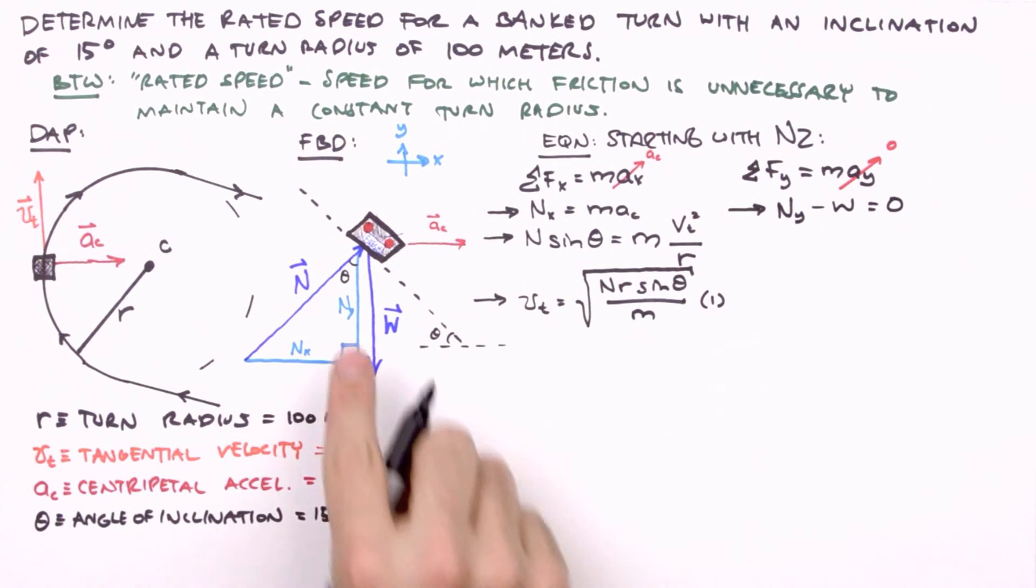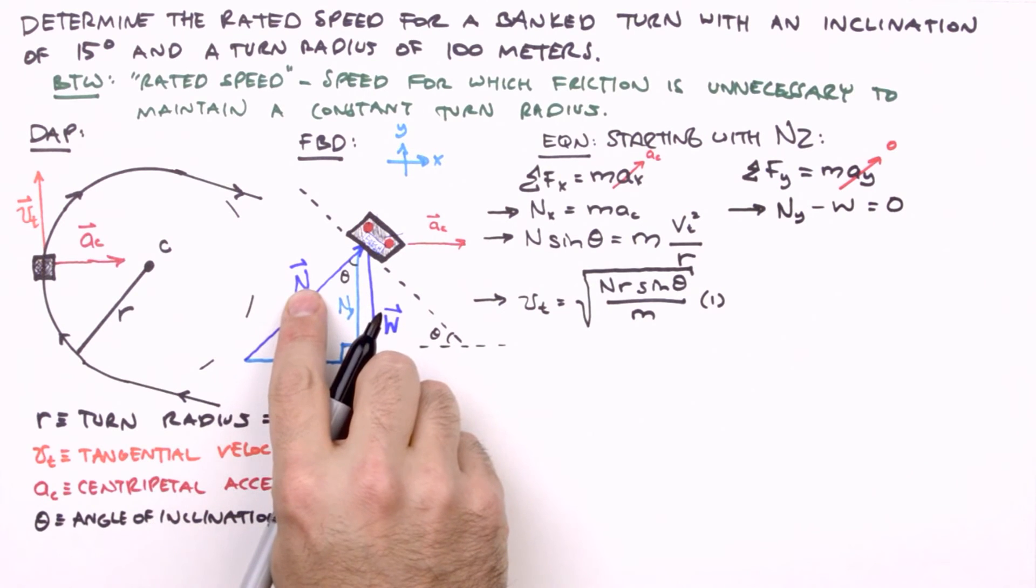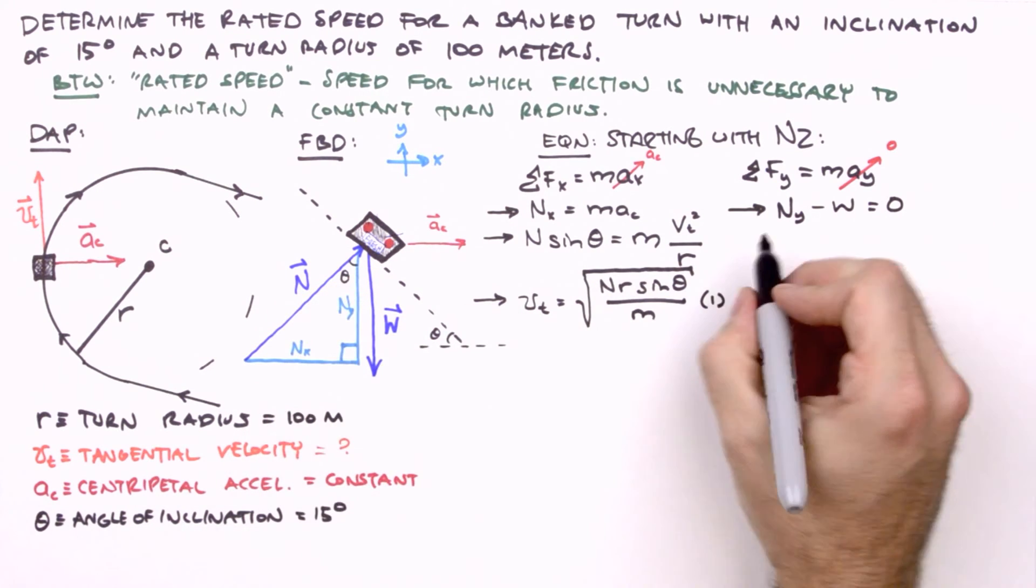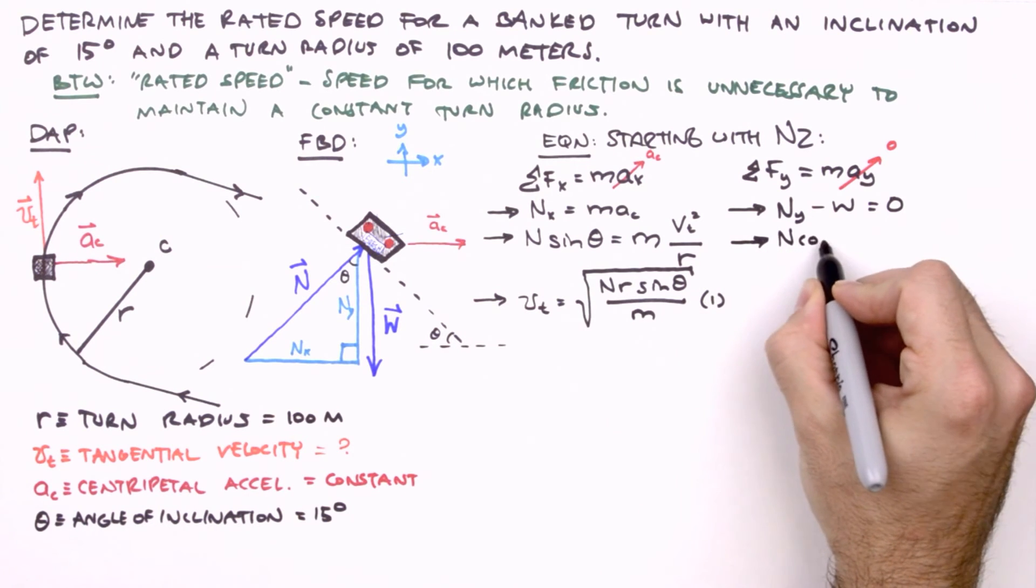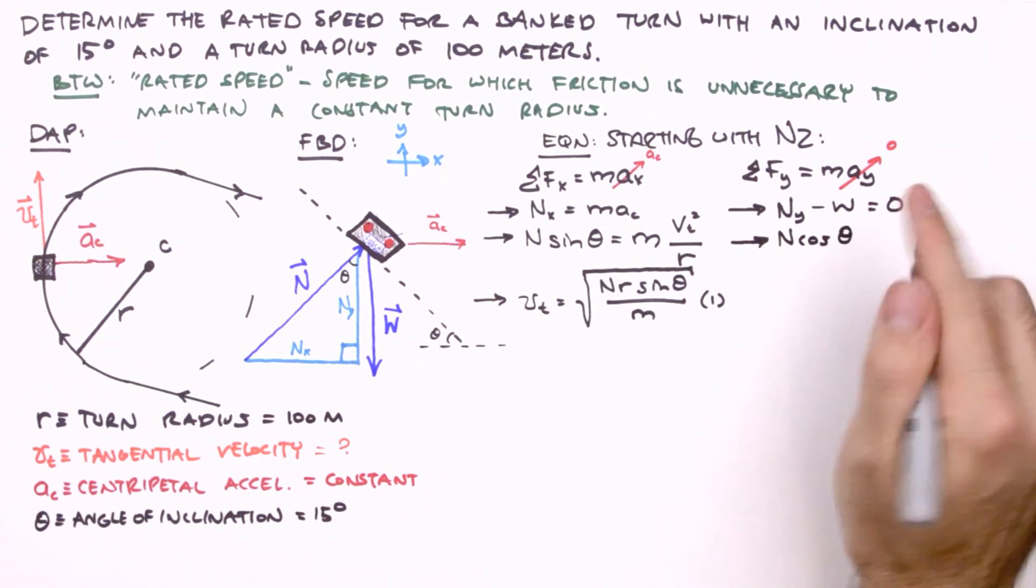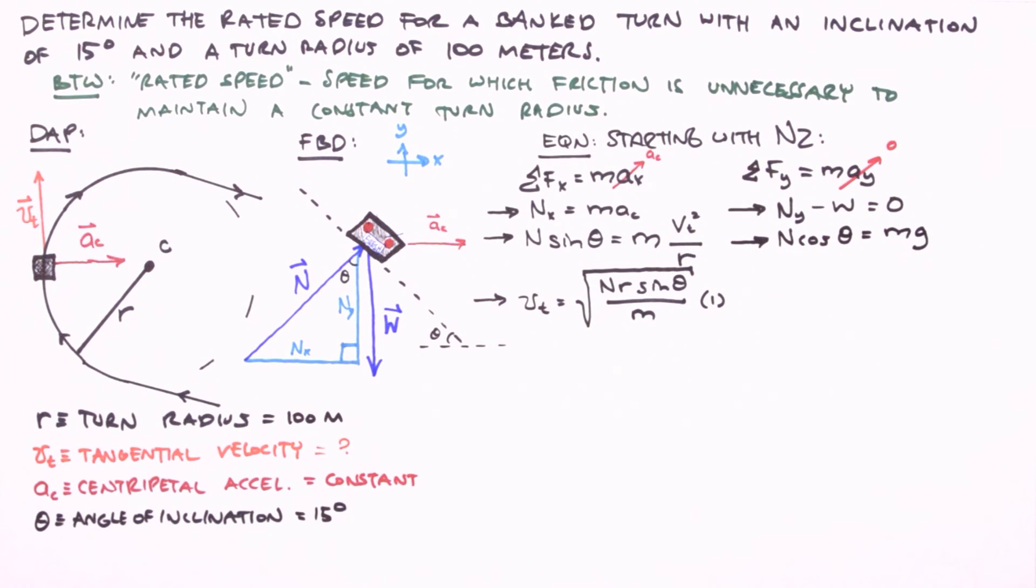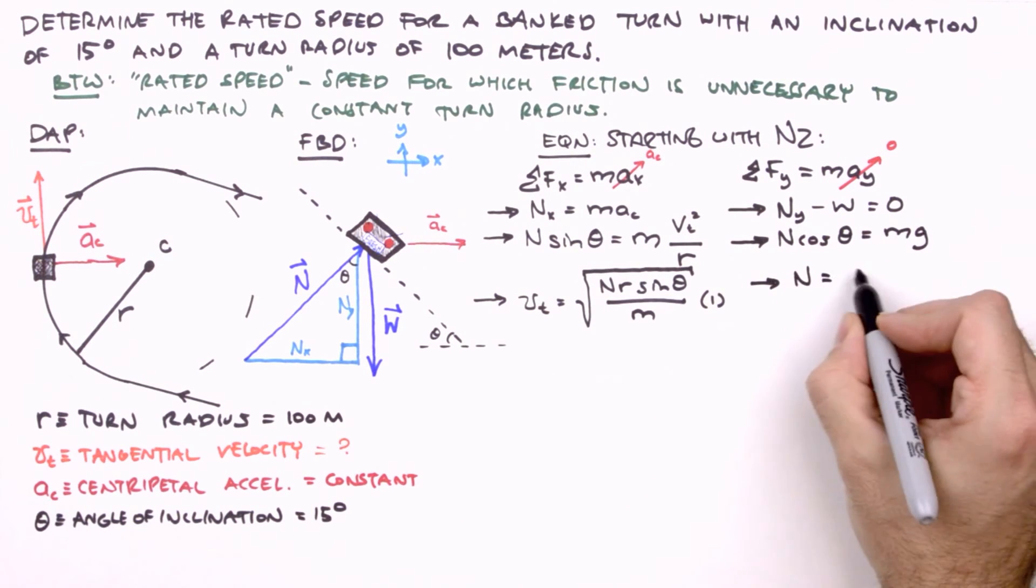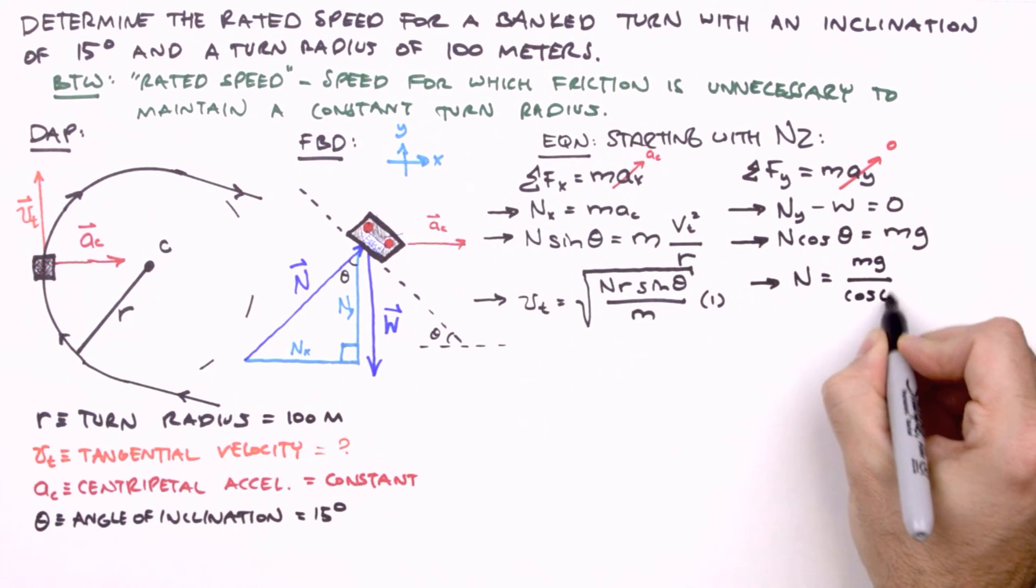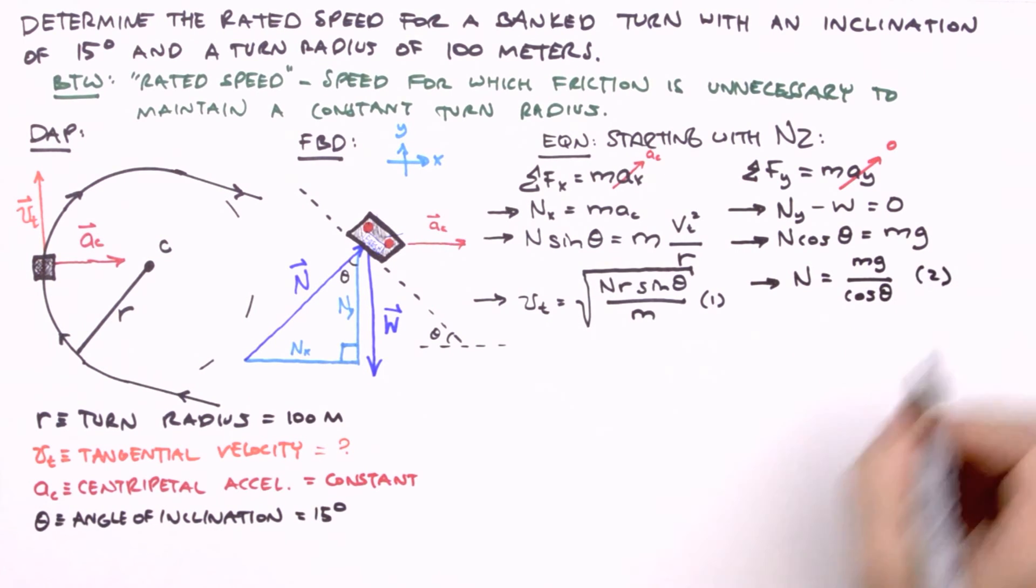Here, n sub y is related to n by a factor of cosine theta. So we can write n cosine theta, and we're going to move weight over to the other side and use its mathematical definition, equals mg. Solving for n, we get n equals mg over cosine theta. And we'll label this equation number two.